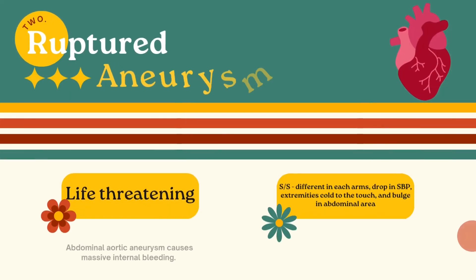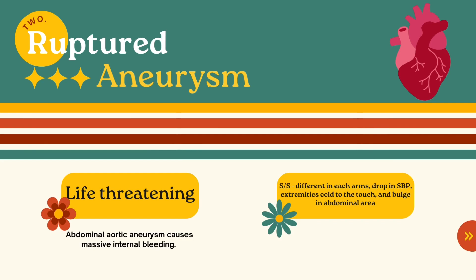Next is ruptured aneurysm. This is a life-threatening condition — abdominal aortic aneurysms cause massive internal bleeding. Signs and symptoms include different blood pressures in each arm, a drop in systolic blood pressure, extremities cold to the touch, and a bulge in the abdominal area.